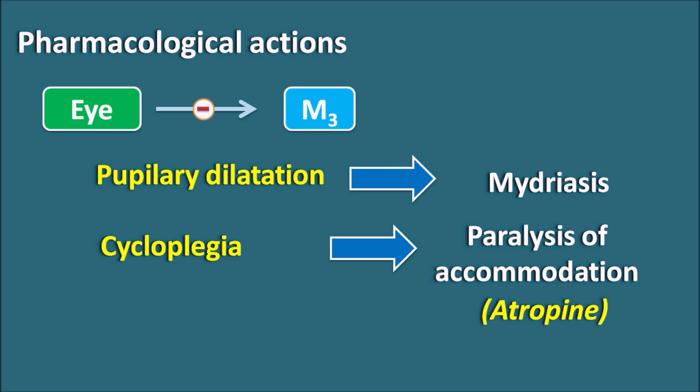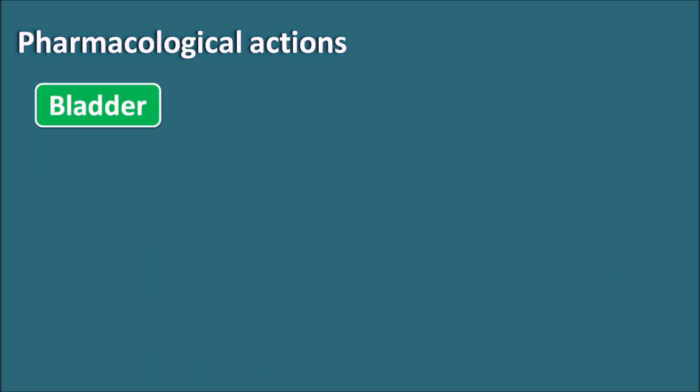Whenever only pupillary dilatation is required, cyclopentolate and tropicamide can be used as mydriatics. Because of pupillary dilatation as well as cycloplegia, anticholinergics can increase intraocular pressure, which may precipitate glaucoma in susceptible patients. So anticholinergics should be carefully given to patients who have increased intraocular pressure.